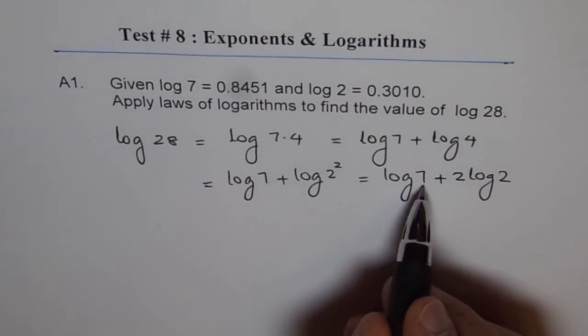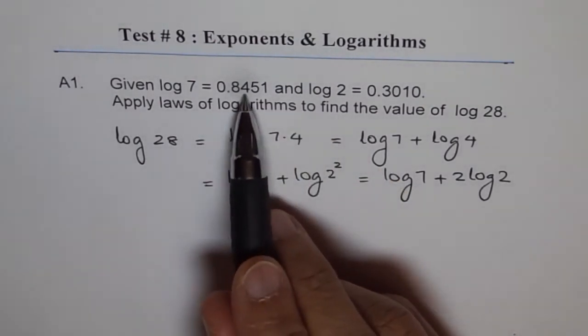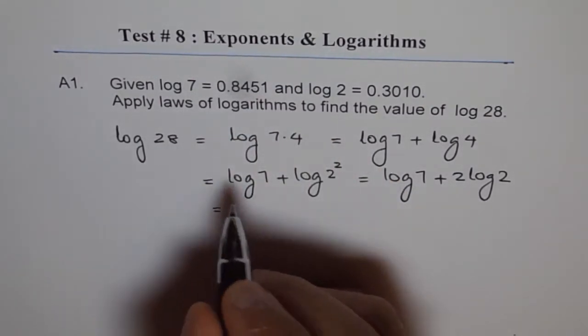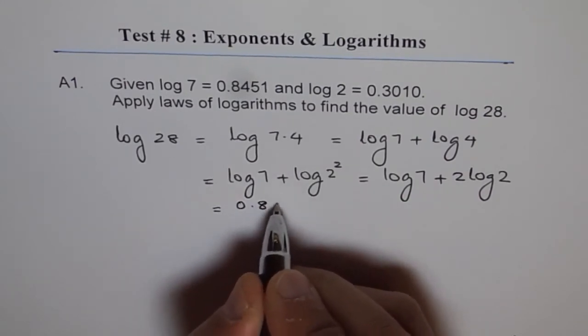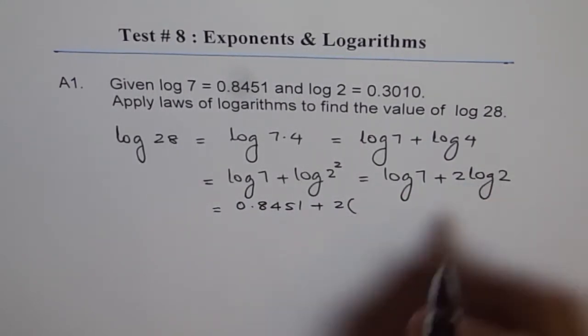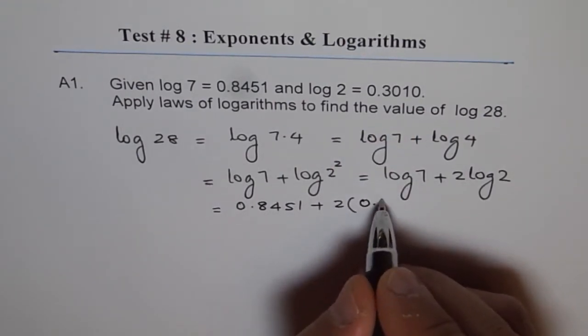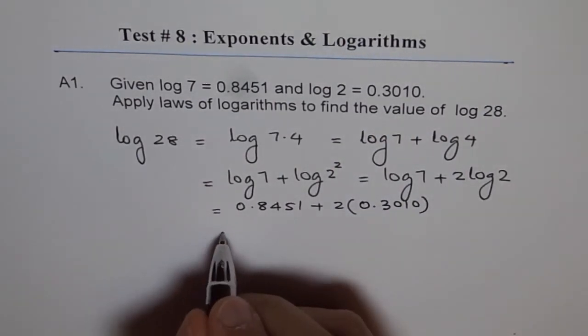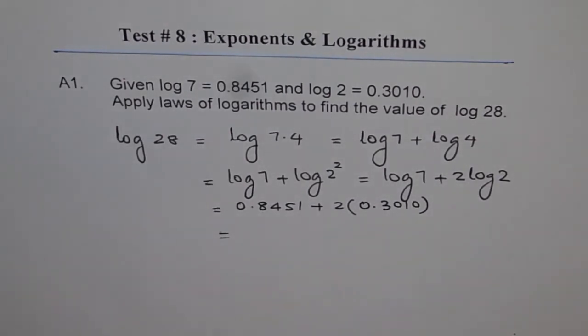Now we know log 7 which is 0.8451, so we write 0.8451 plus 2 times log 2 which is 0.3010. Then we can use the calculator and find the answer.